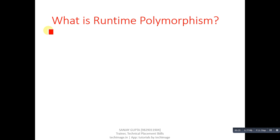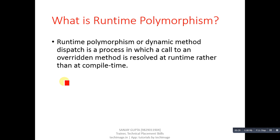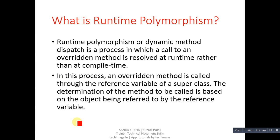First question is what is runtime polymorphism? Answer is runtime polymorphism or dynamic method dispatch is a process in which a call to an overridden method is resolved at runtime rather than at compile time. In this process, an overridden method is called through the reference variable of a superclass. The determination of the method to be called is based on the object being referred to by the reference variable.